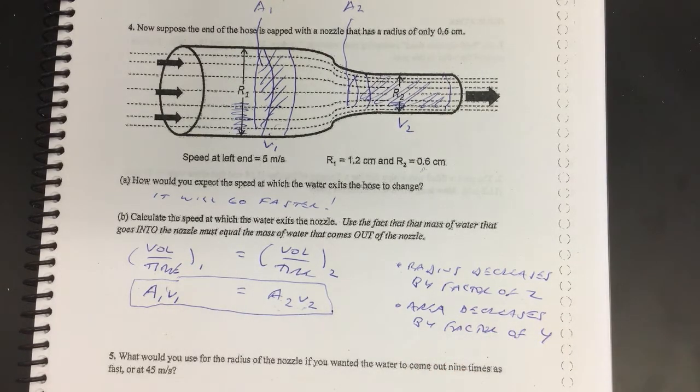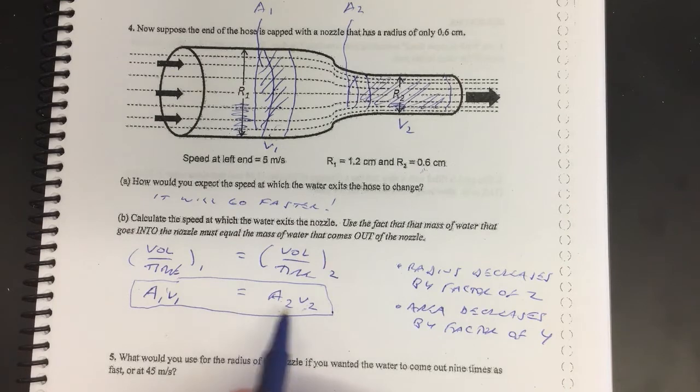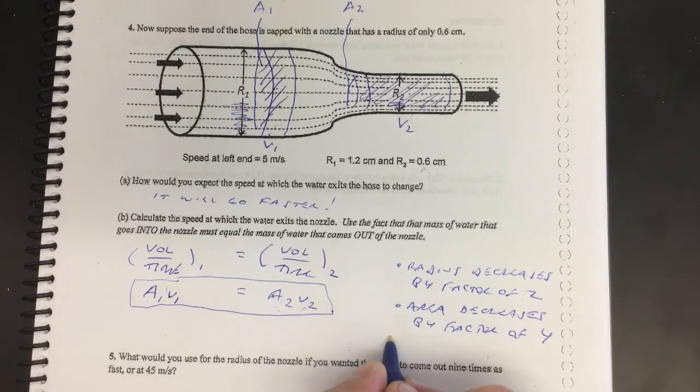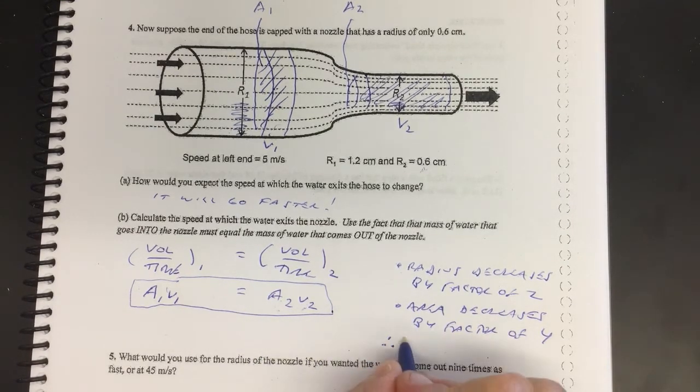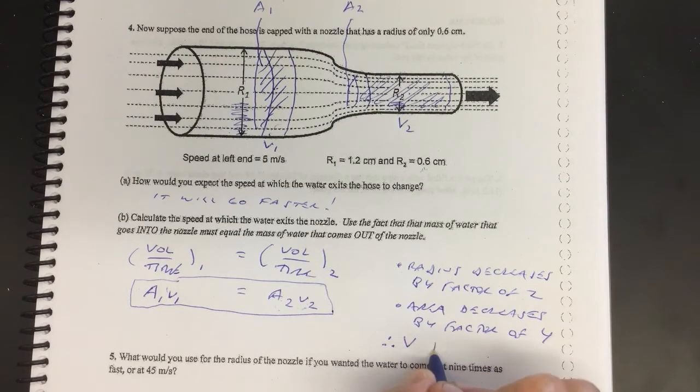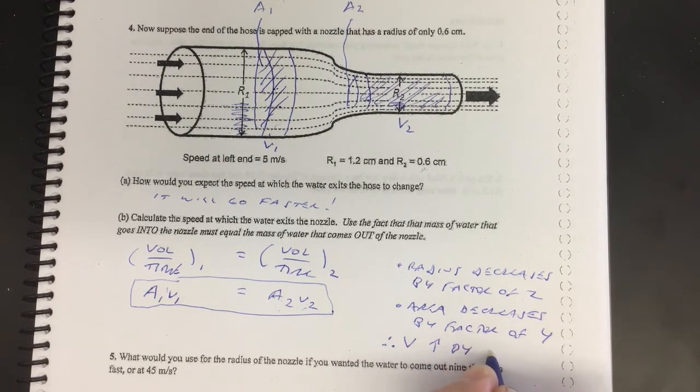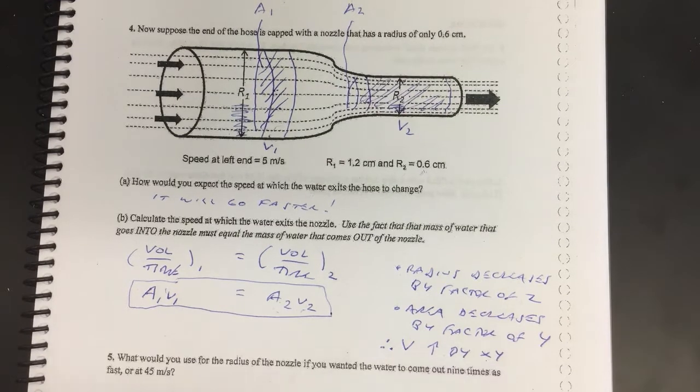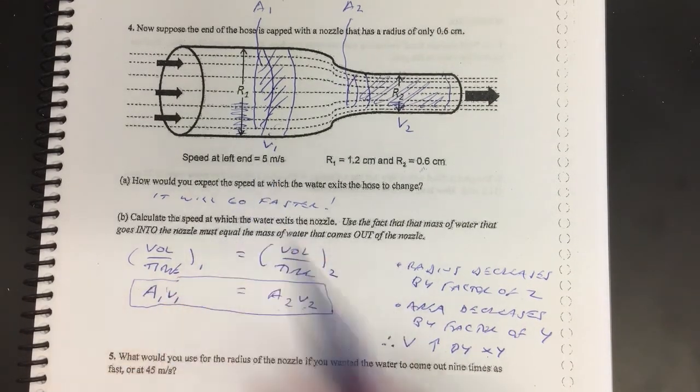So the area is four times smaller, right? Well, if the area is four times smaller, then what you can do is you can say, well, therefore v increases by a factor of four.